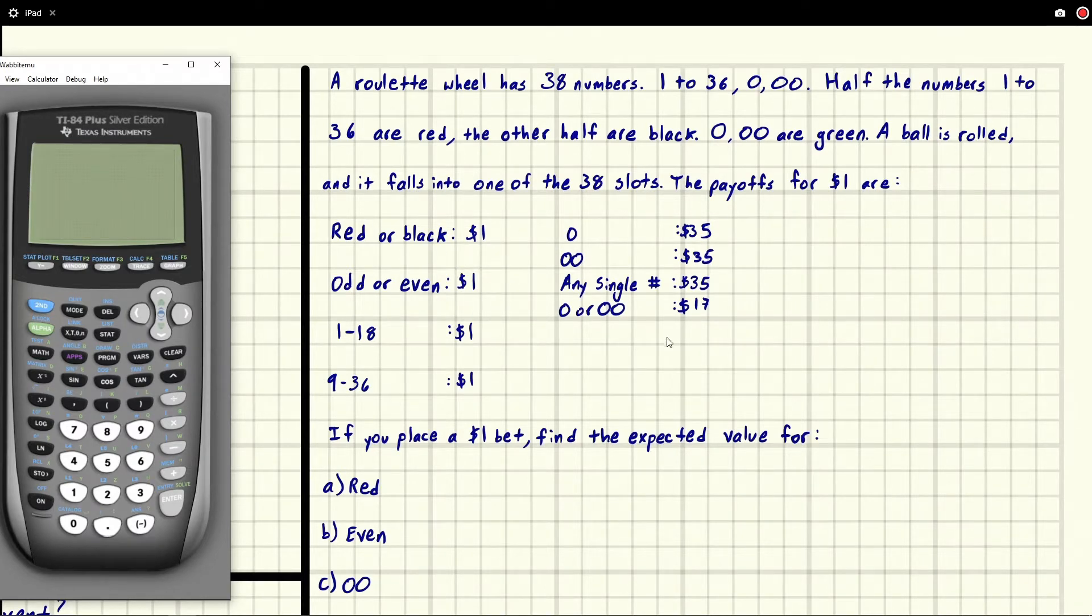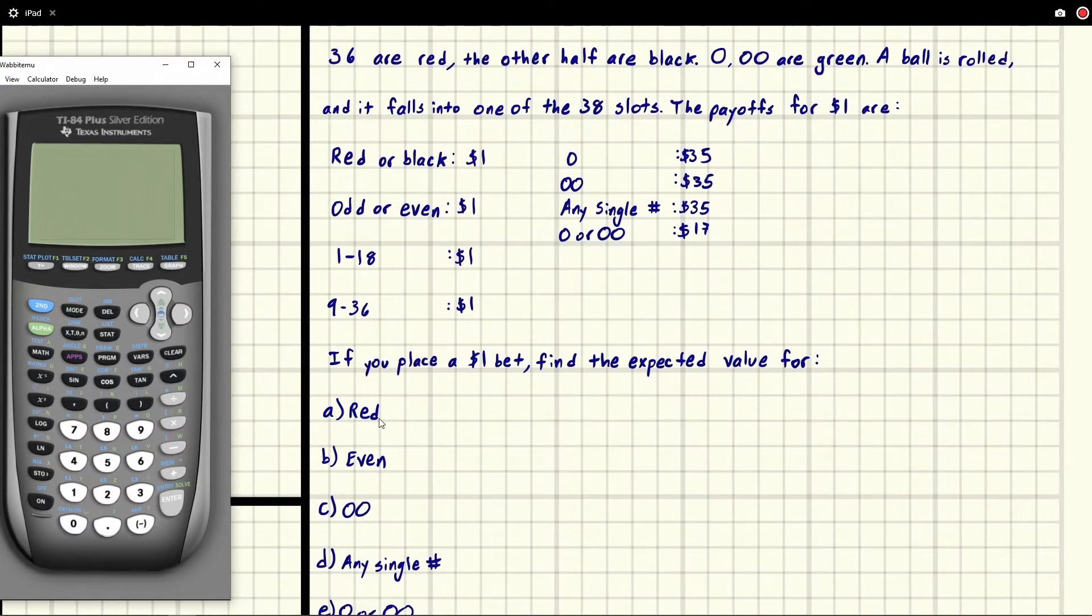These are the payoffs. When we're doing expected value, they're going to ask us to place a $1 bet and find the expected value for various scenarios. Previously when you paid for a competition, that was deducted from your winnings, but if you bet a dollar, you actually get your dollar back at the end.